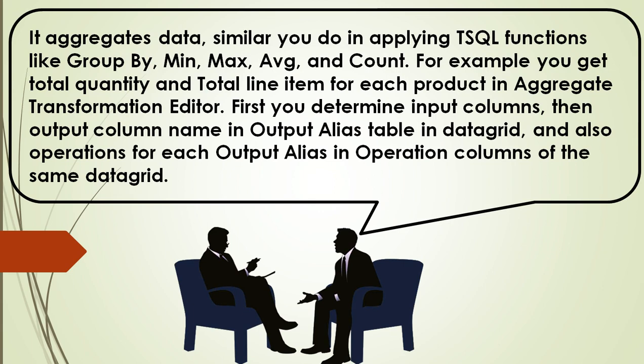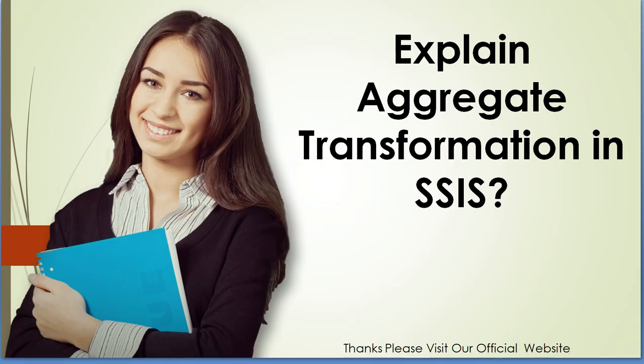For example, you get total quantity and total line items for each product. In the aggregate transformation editor, first you determine the input column, then the output column name, output alias, operations for each output alias in the operation column of the data grid.